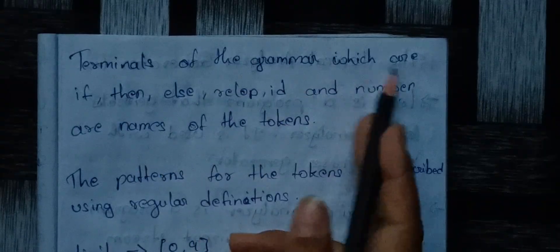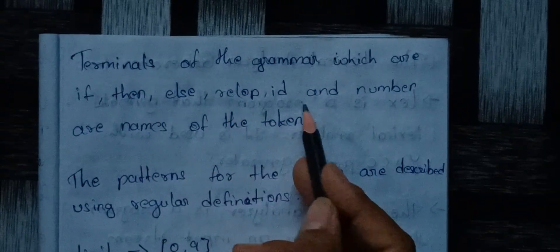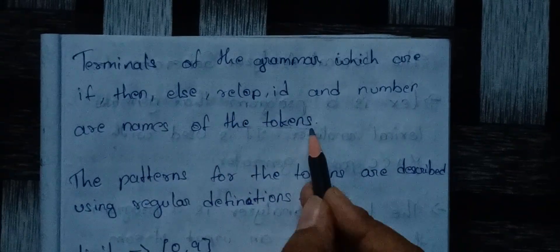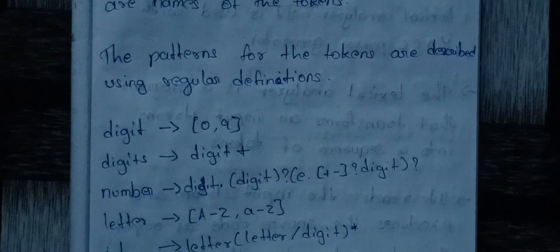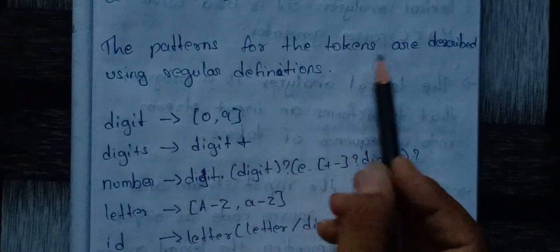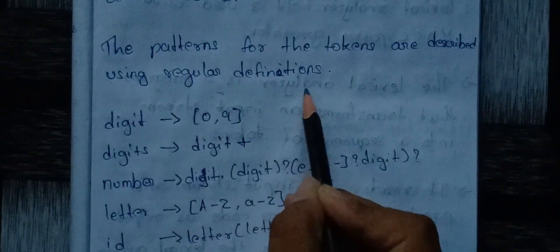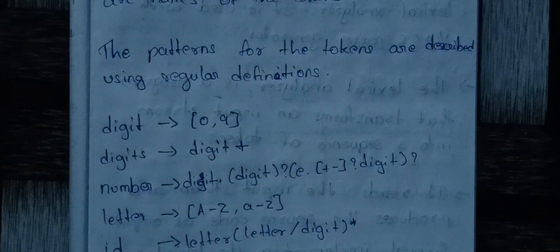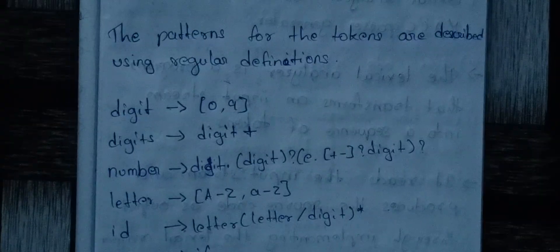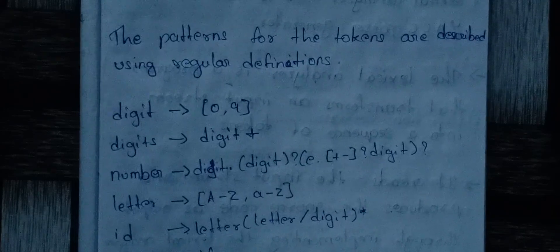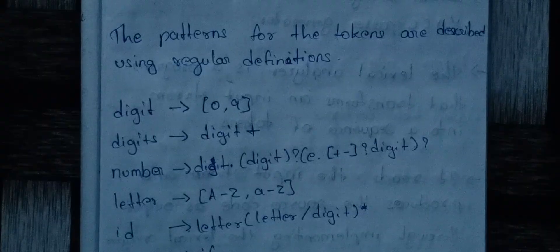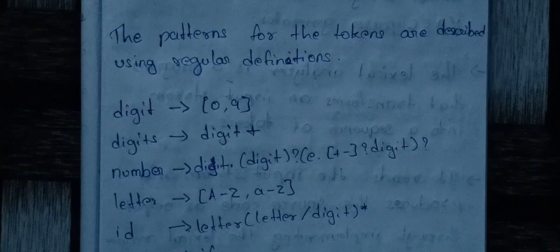This syntax is similar to Pascal. Relop is a comparison operator — like equal to, not equal to, and greater than. In Pascal, not equal to is written differently. The terminals of the grammar — if, then, else, relop, id, and number — are the names of the tokens.